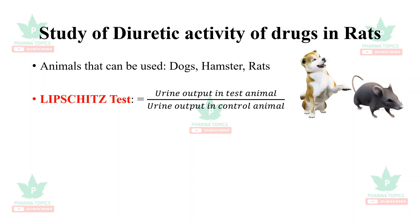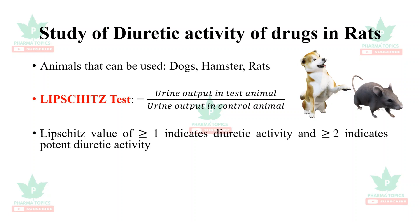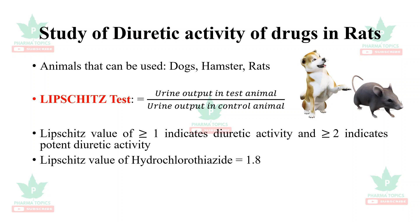The Lipschitz test is used. The formula is: urine output of test animal divided by urine output of control animal. A Lipschitz value of greater than or equal to 1 indicates diuretic activity. A value of greater than or equal to 2 indicates potent diuretic activity. The Lipschitz value of hydrochlorothiazide is 1.8, and the Lipschitz value of furosemide is 4, which is a potent diuretic.